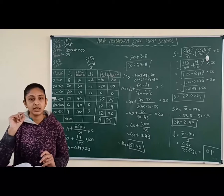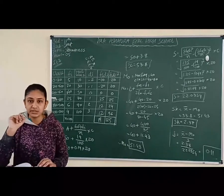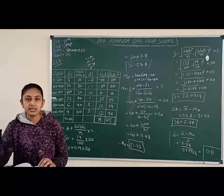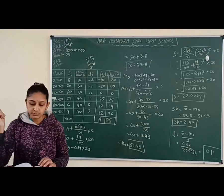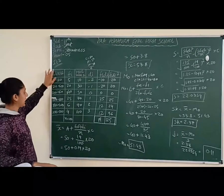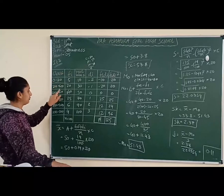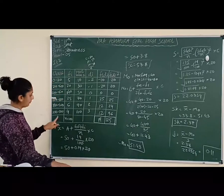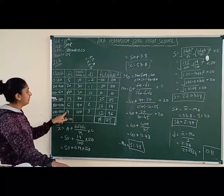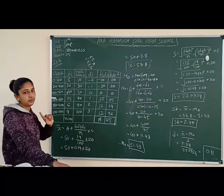Here, the information given is class and frequencies. First of all, we have to find out the mid-point of each class, then D, FiDi, and FiDi². The classes given are 0–20, 20–40, 40–60, up to 120, with their respective frequencies.